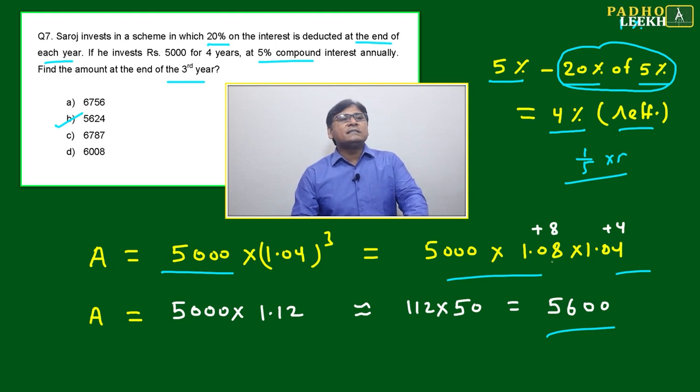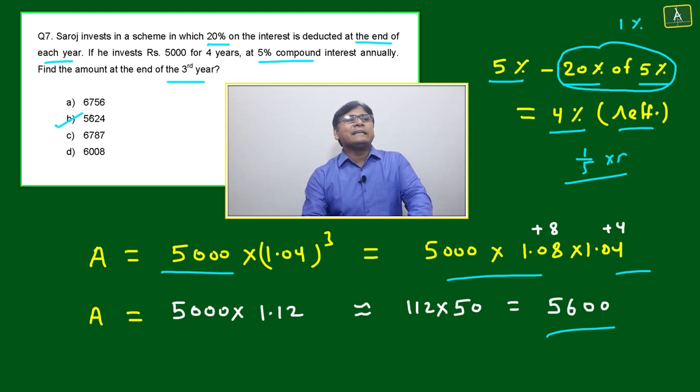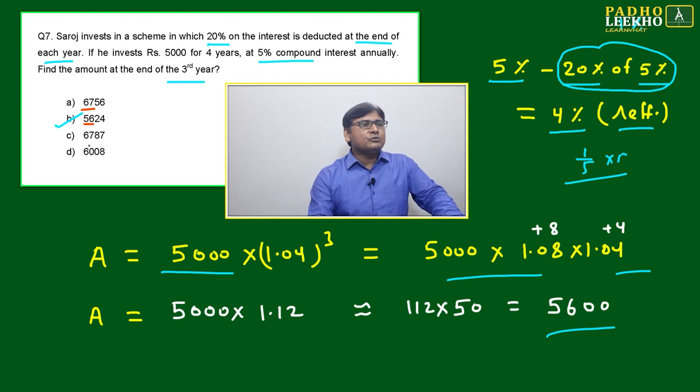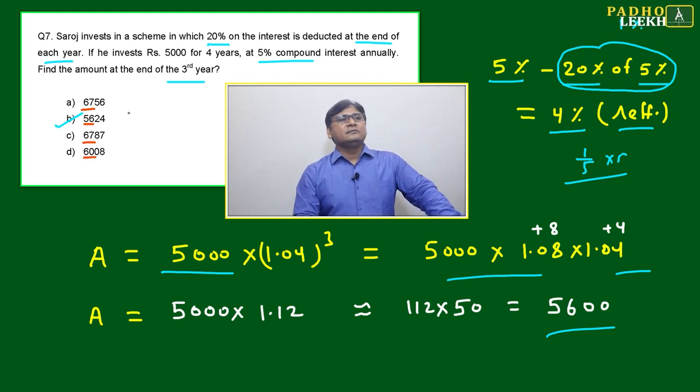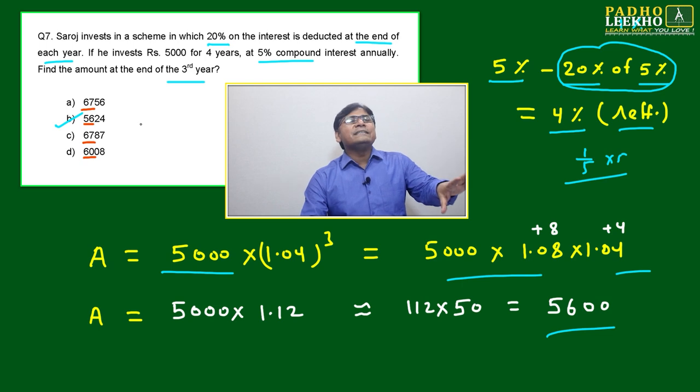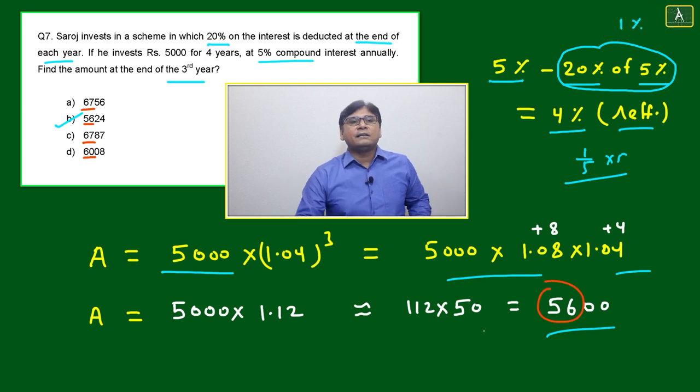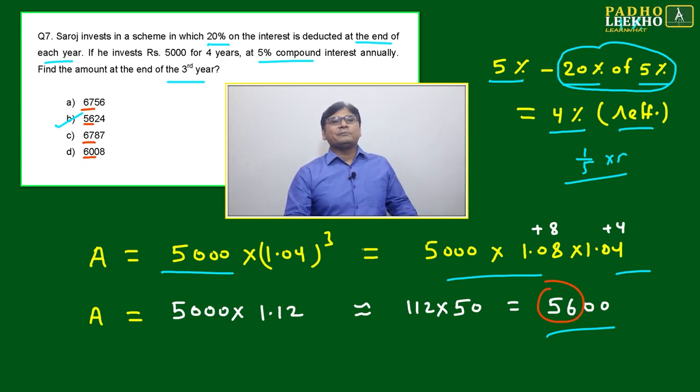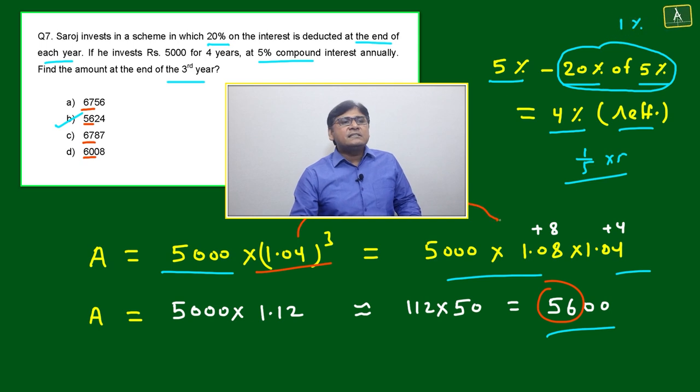Once we will take the exact calculation here, we have approximated a little bit, but that is enough to mark the answer. Because initial two or three digits you will get the same, that much is enough. Just observe the initial two digits: 67, 56, 67, 6008. If any of the two initial digits you got, that is enough to mark. And that you will get after approximation.